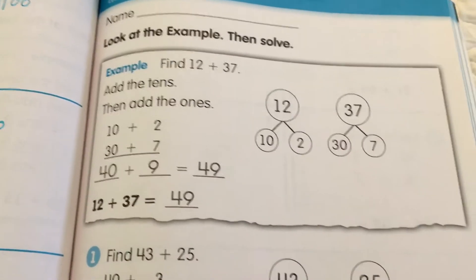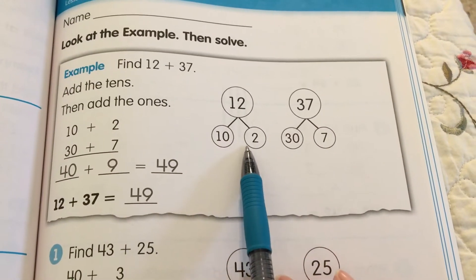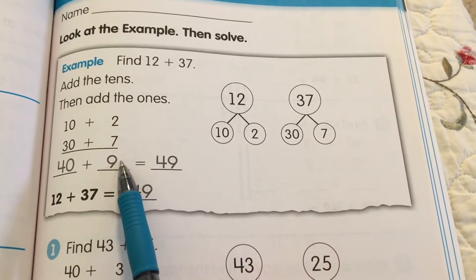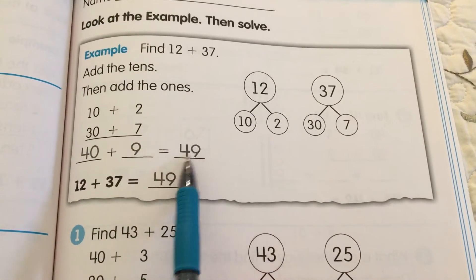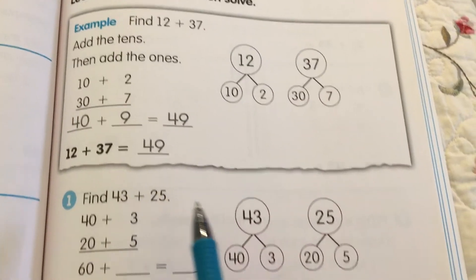And it's just exactly like what we were doing today. You're going to do your number bond. You're going to decide how many 1's, how many 10's, and 40 plus 9 is 49. So 12 plus 37 is 49.